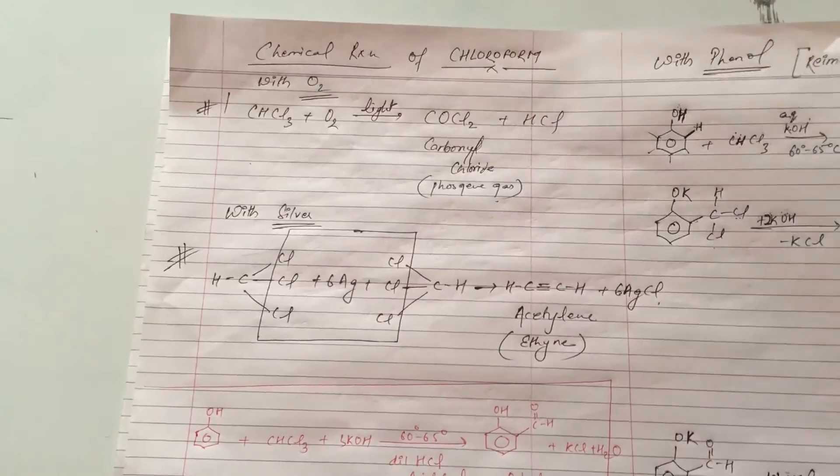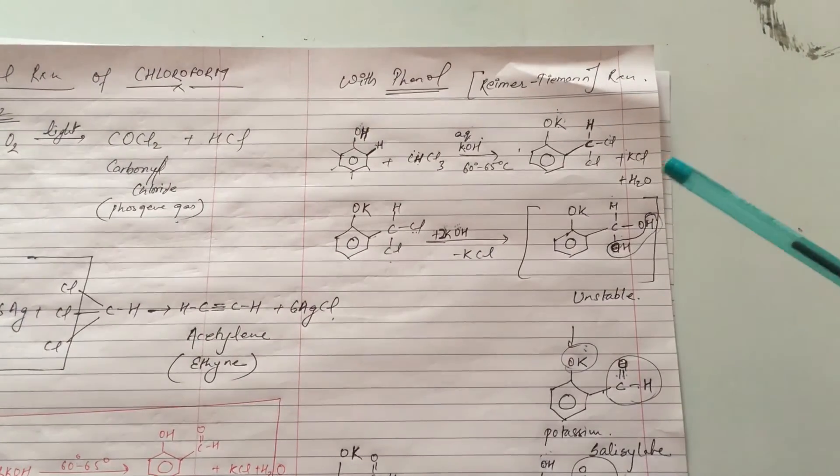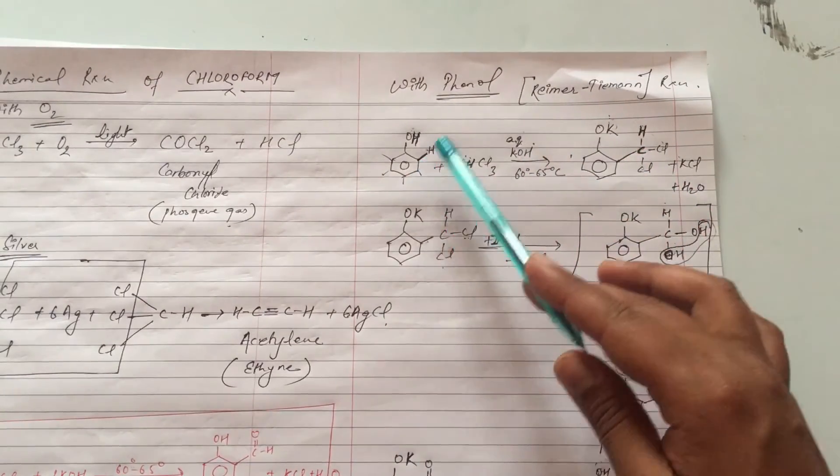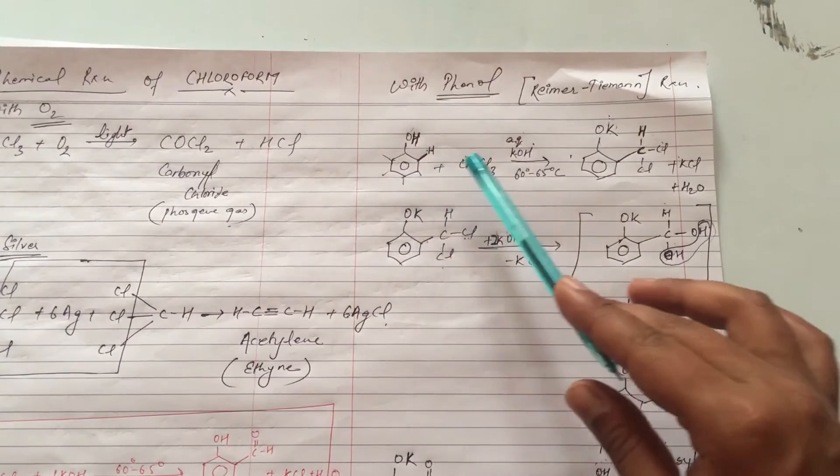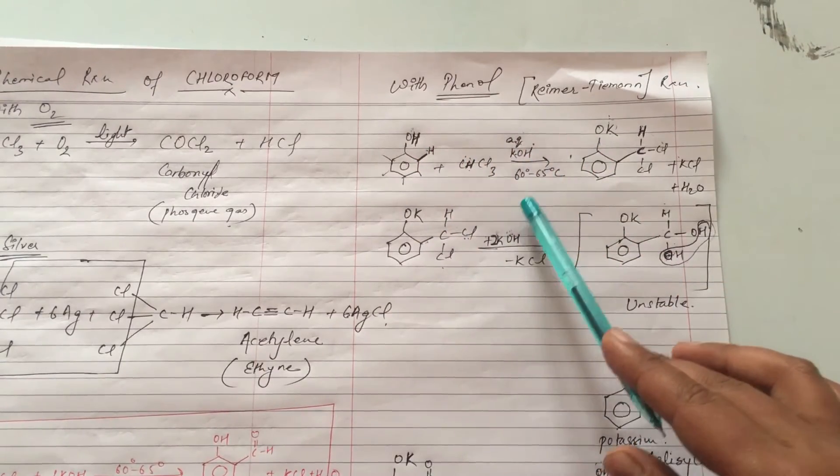Now we have another important reaction. What is the Reimer-Tiemann reaction? The Reimer-Tiemann reaction is one of the very important reactions that is often asked in examination. What is the Reimer-Tiemann reaction? The Reimer-Tiemann reaction is phenyl group with chloroform in aqueous KOH presence at 62-65 degree centigrade.